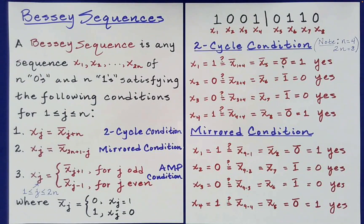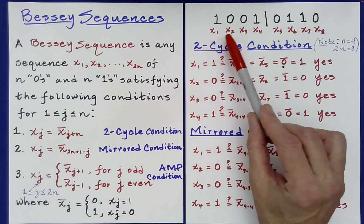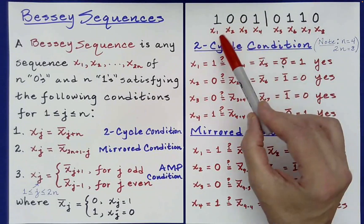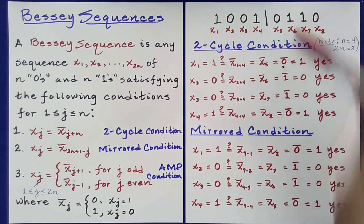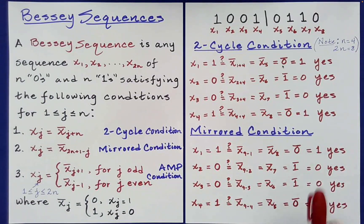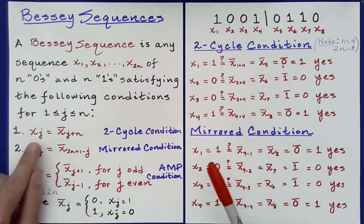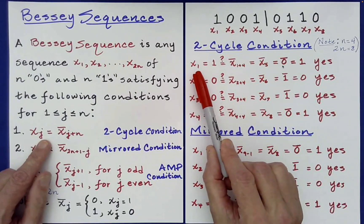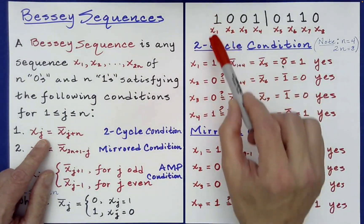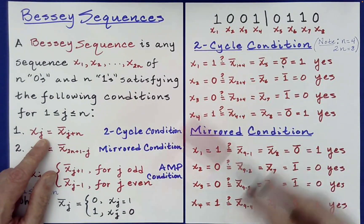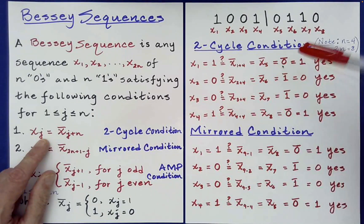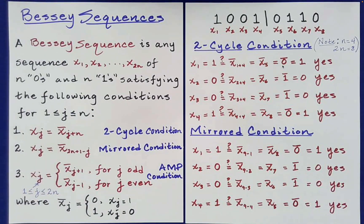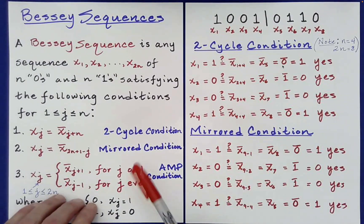That's our supposed Bessie sequence, and I've written out the corresponding x sub j terms for each digit — 8 terms in total. Let's check the two-cycle condition. Note that n in this particular case is 4, and 2n is 8. Is it the case that x sub 1, which equals 1, is equal to the complement of x sub 1 plus 4, which is x sub 5? Well, x sub 5 equals 0, and the complement of 0 is 1. So indeed we get equality — the two-cycle condition is satisfied for the first value.